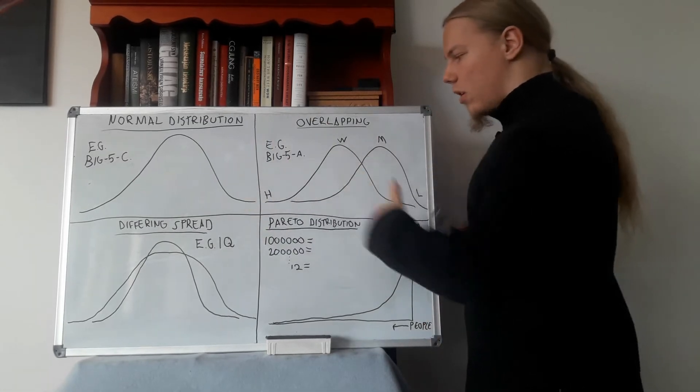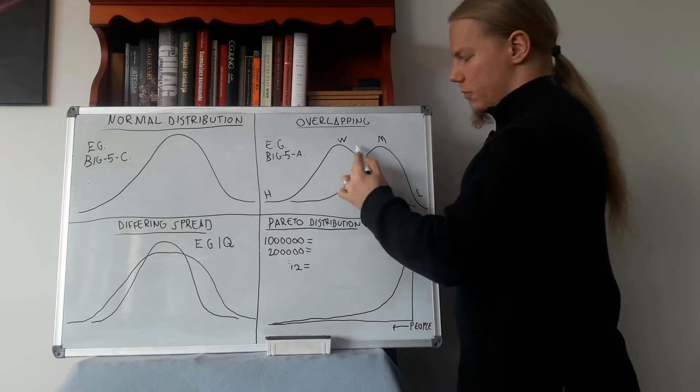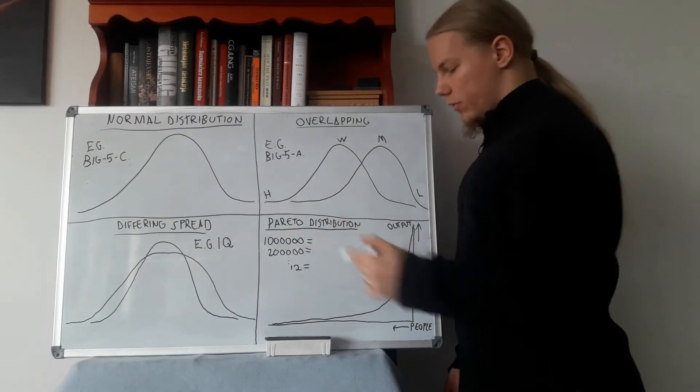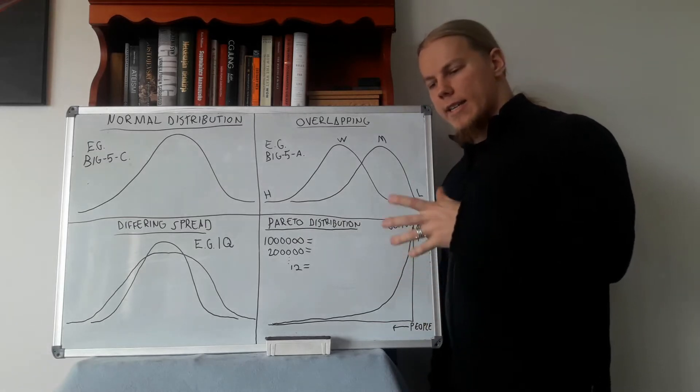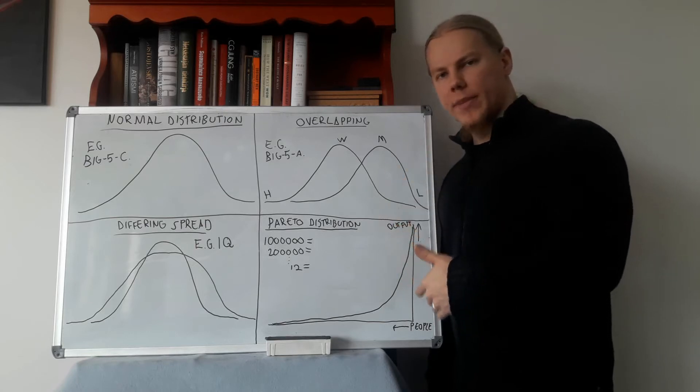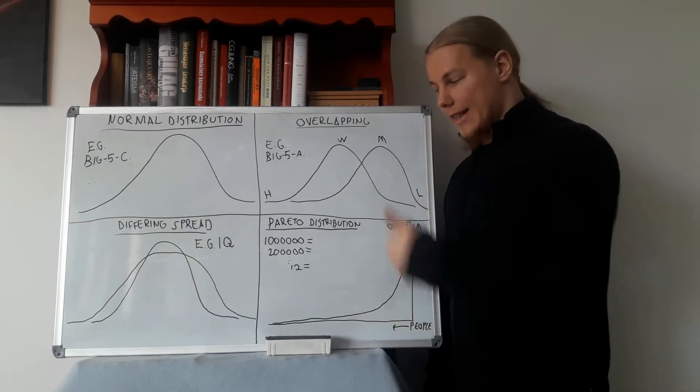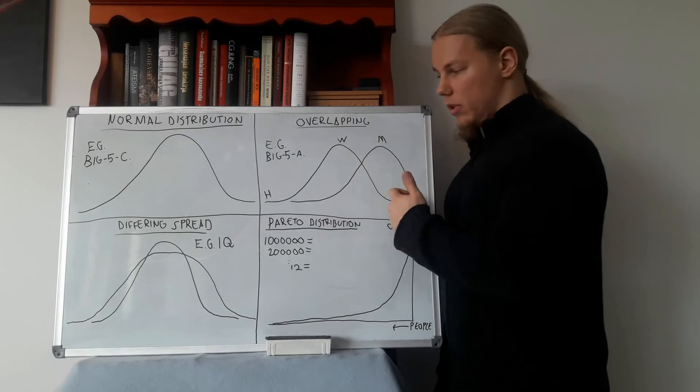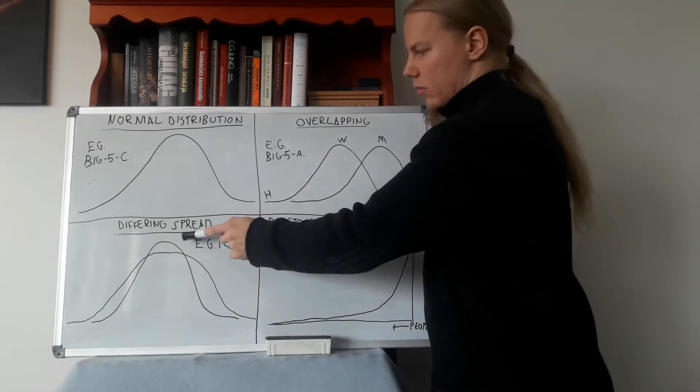The other thing to note is that while the difference between the two distributions is not that great, the difference within a distribution is pretty huge. That goes for both distributions. What needs to be understood is that in regards to personality traits where there are sex differences, still the differences within the sexes are greater than between the sexes. This is worth thinking about because when people say that women are more agreeable and men are more disagreeable, this is what it means: that men are slightly on average tilted more to the disagreeable end and women to the other end.